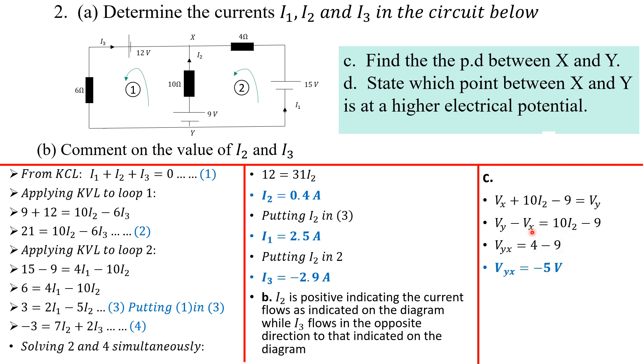So VY minus VX is negative 5, and VY minus VX is basically VYX. That's the potential difference between Y and X, so that's negative 5 volts. What does this tell you? It tells you that if VY minus VX is negative, it means VX is higher, or X is at a higher potential. So VX is higher than VY, X is at a higher potential compared to Y.